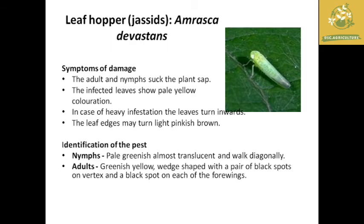The next pest is leafhoppers, also known as jassids, with scientific name Amrasca devastans. The adults and nymphs suck plant sap; infested plants show pale yellow discoloration, and in heavy infestation leaves curl inward and turn light pinkish brown. For identification: nymphs are pale greenish and almost translucent, moving diagonally; adults are greenish yellow wedge-shaped with a pair of black spots on the vertex and a black spot on each forewing.